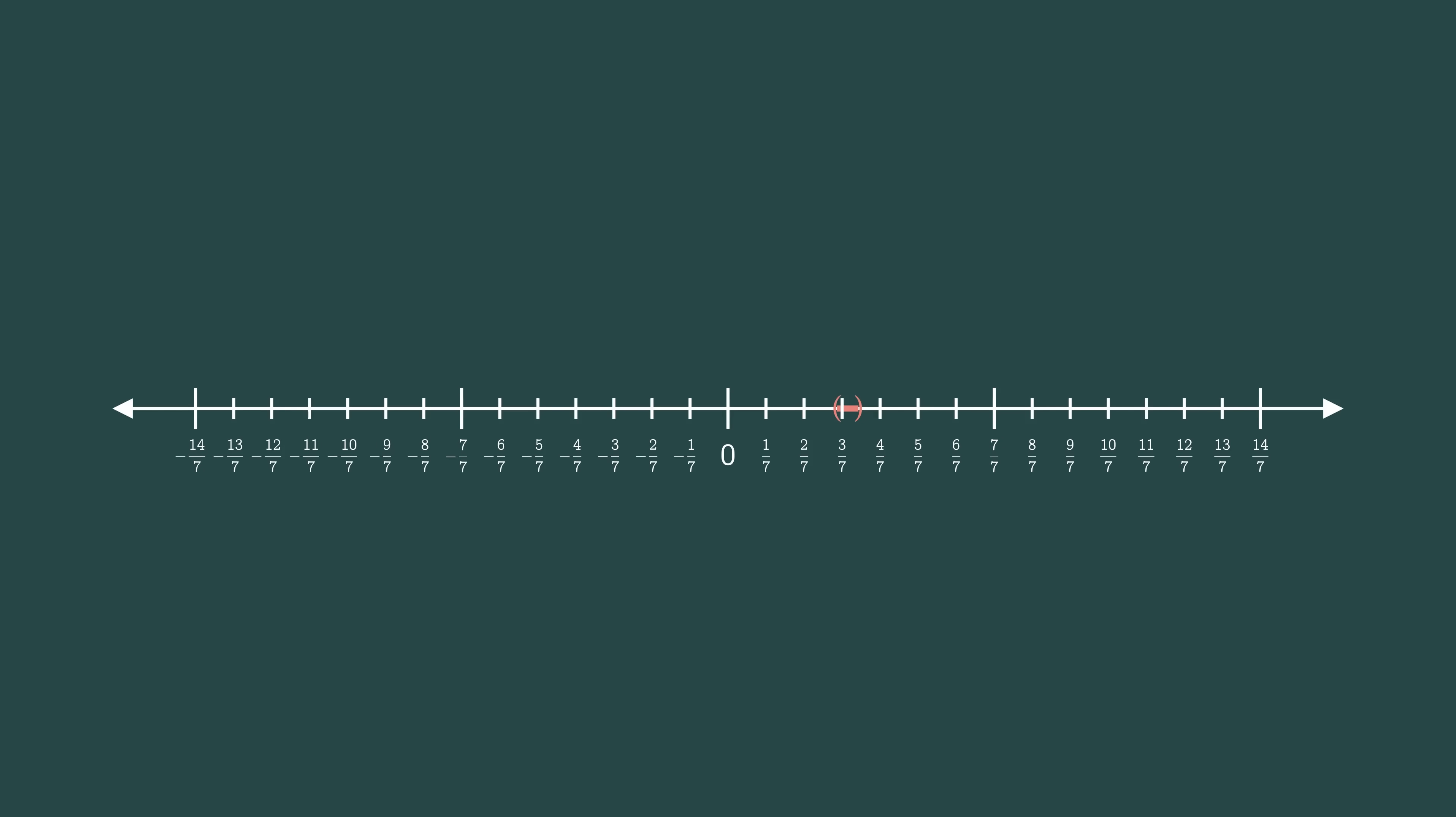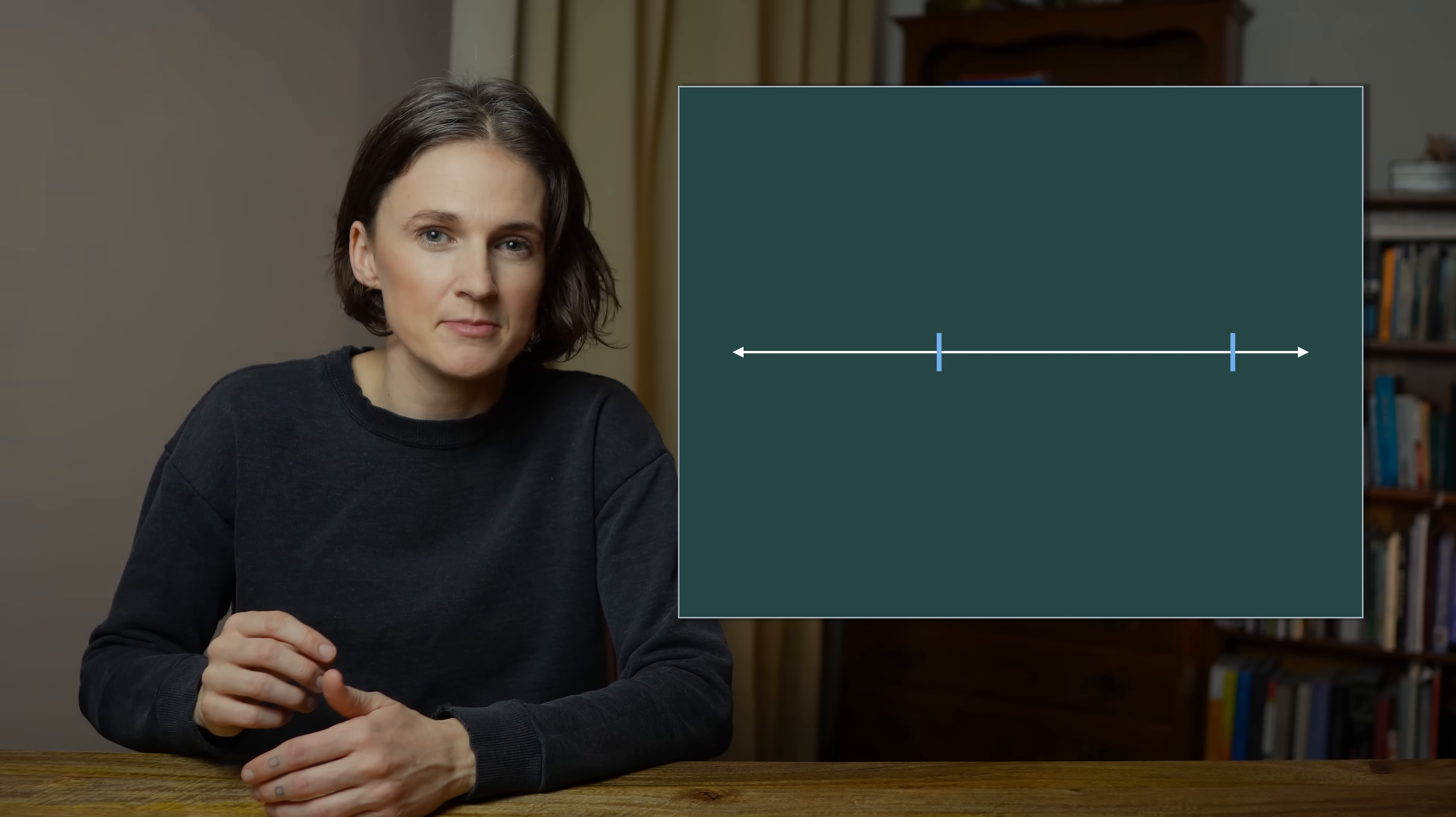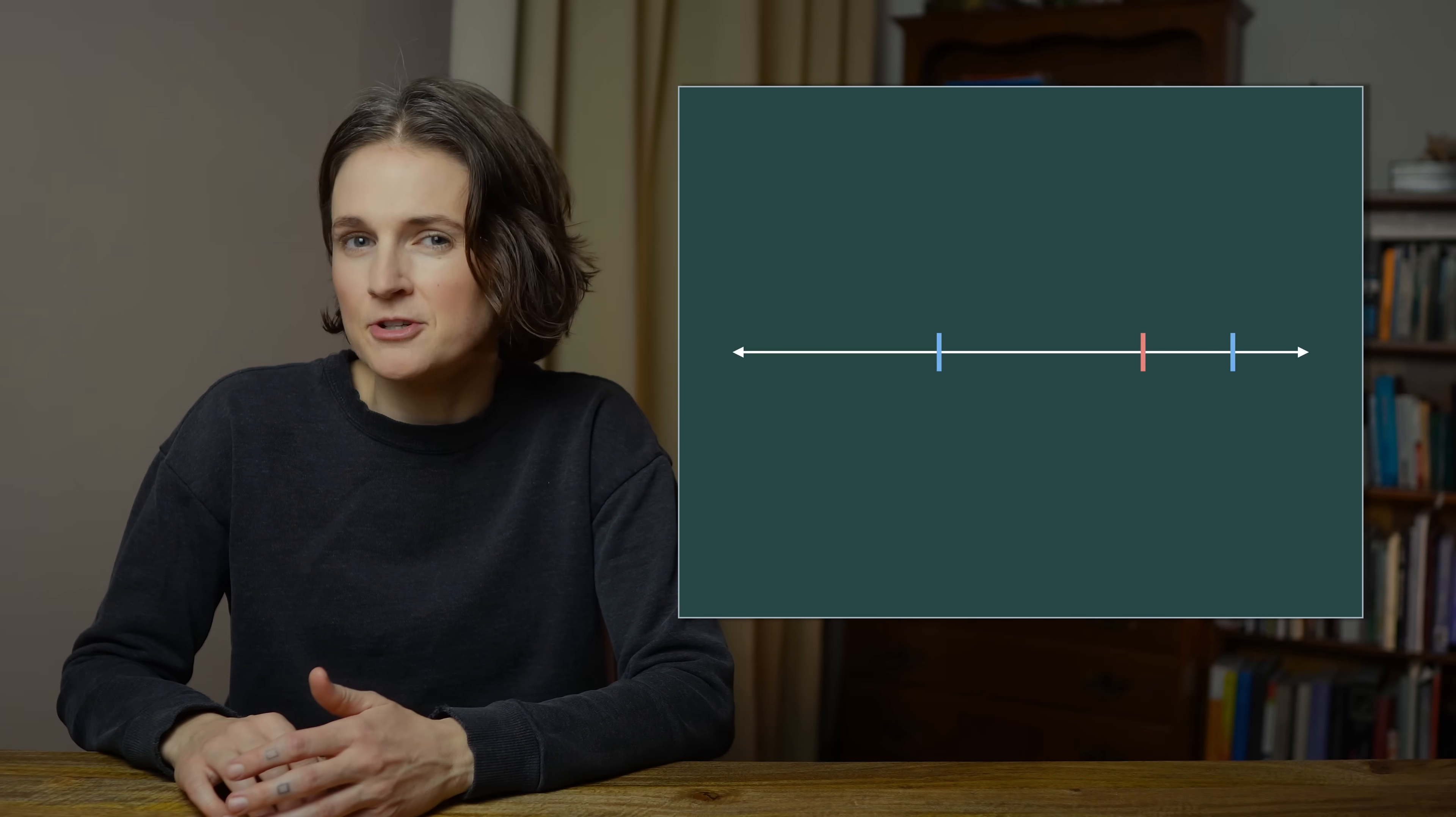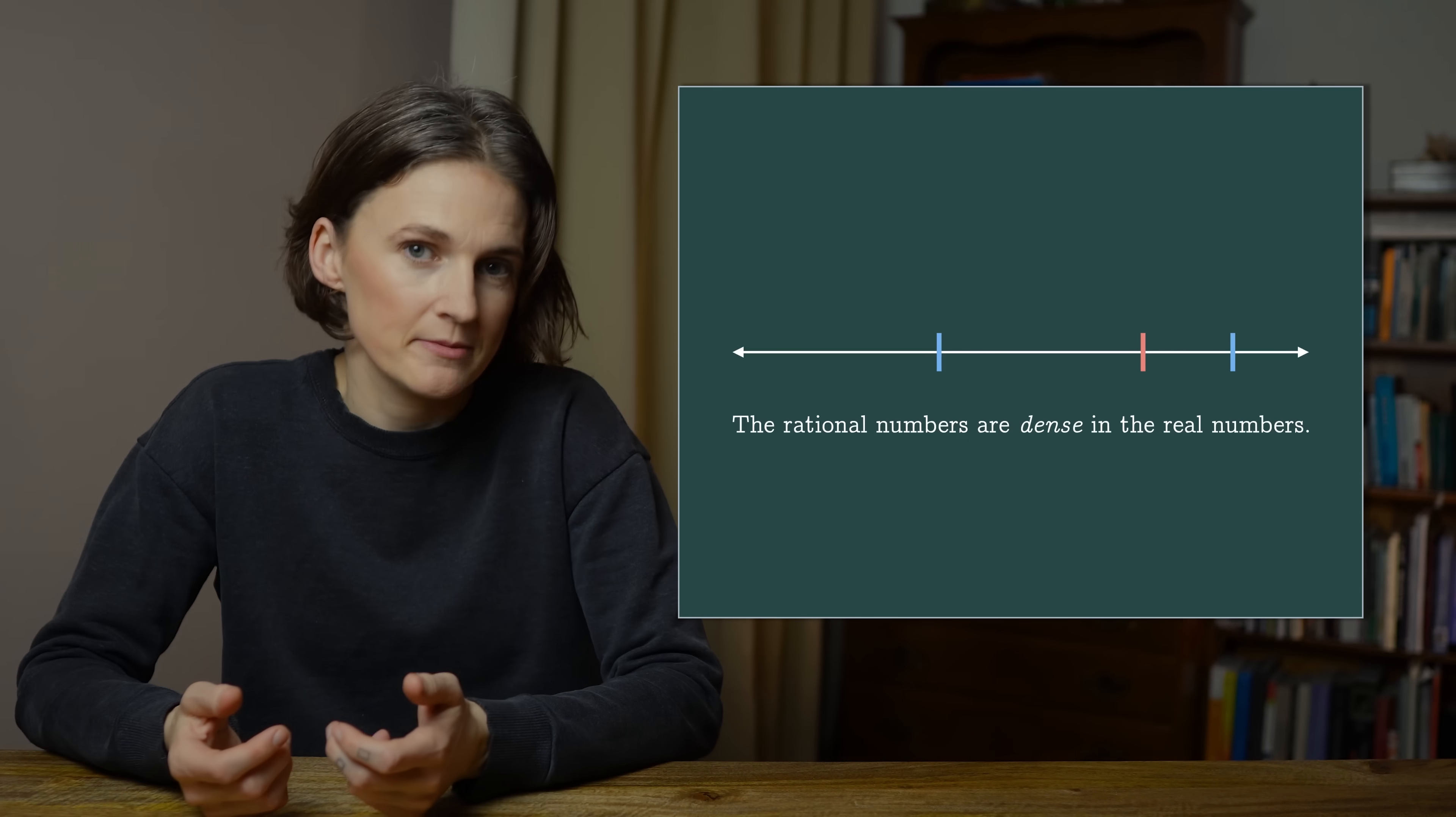At some point, the numbers are so close that you get inside our tiny interval. So, between any two rational numbers, you can always find another rational number. The technical term is that they are dense in the real numbers.